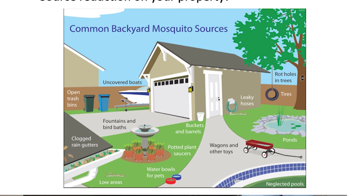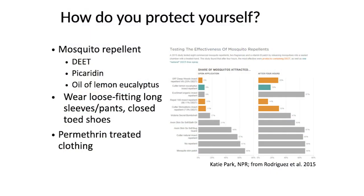As far as ponds and birdbaths, as long as the water is moving you don't need to worry about emptying it out — install something that will keep the water moving. In ponds, it's also helpful to have fish because fish will eat the mosquito larvae and act as your own little control method. And it's also very important to protect yourself and use repellent and dress appropriately.